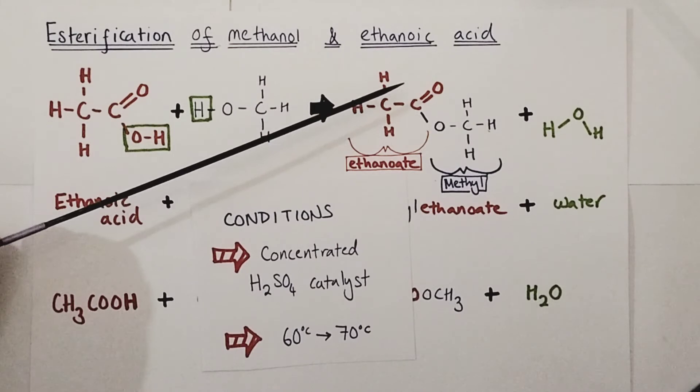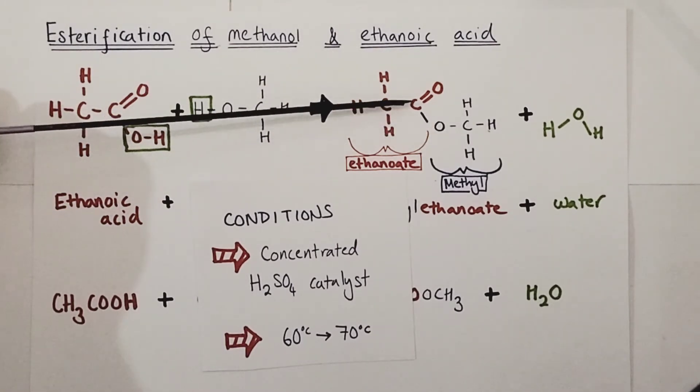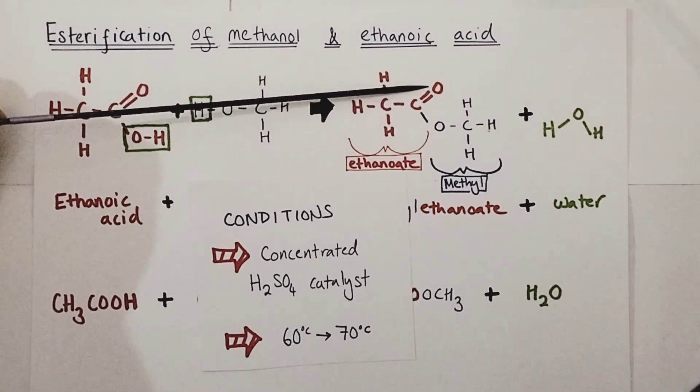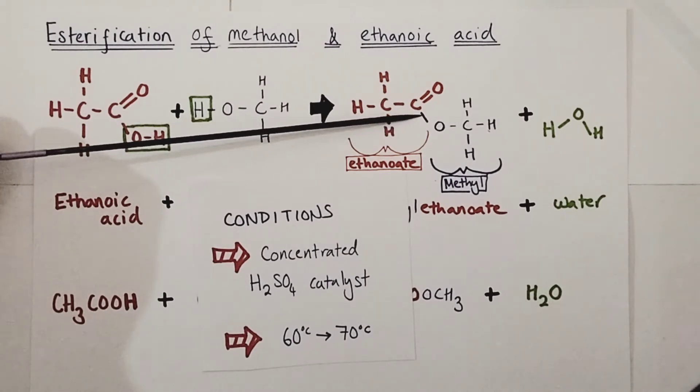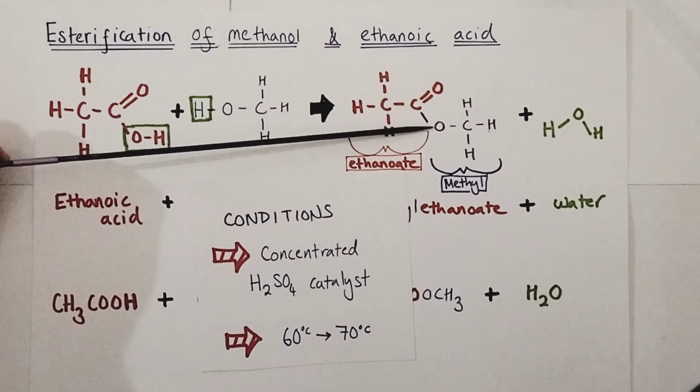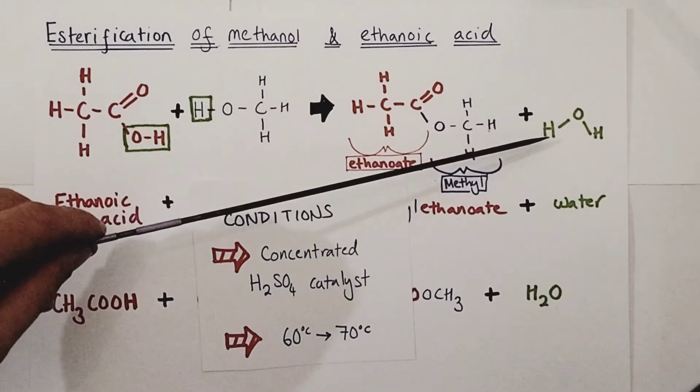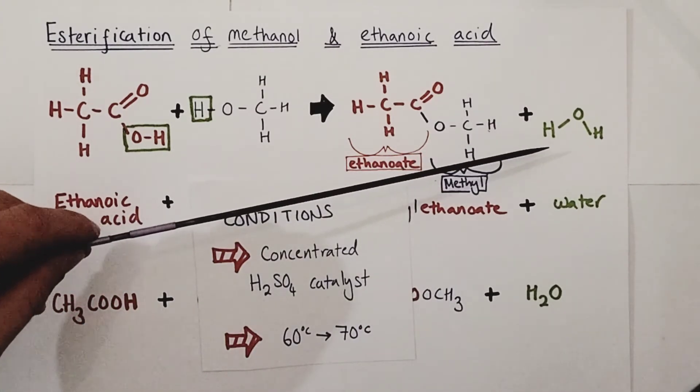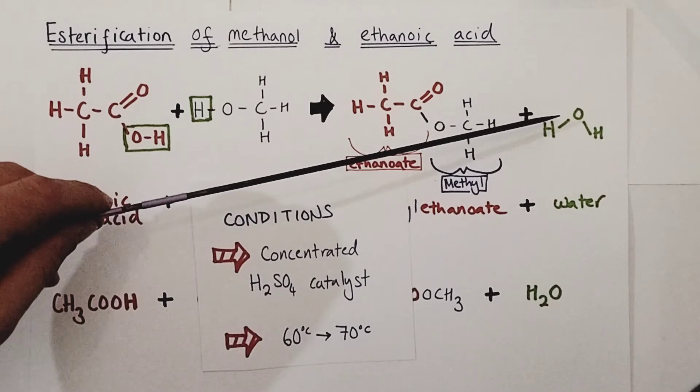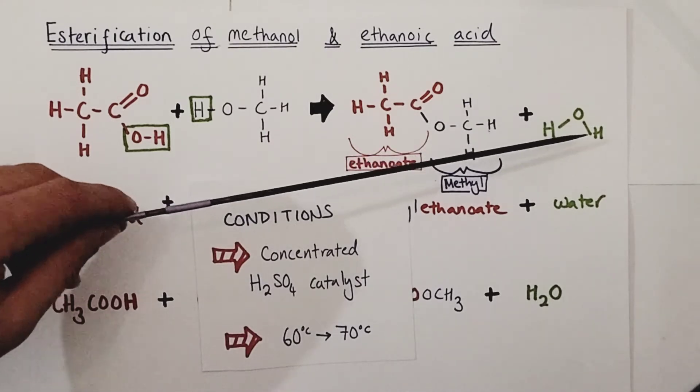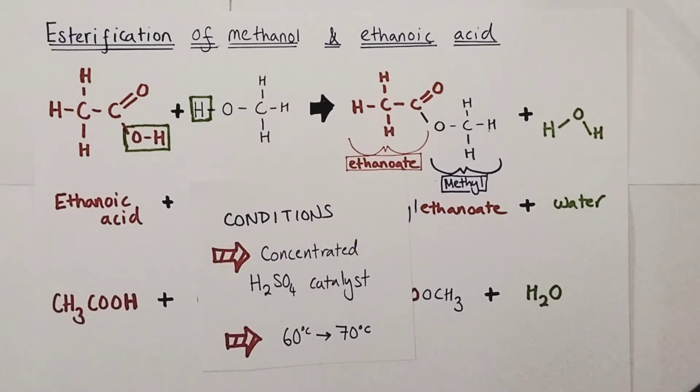You can see the ester linkage has formed here. There's the C=O of the carboxylic acid and then in blue that's my bond to the oxygen of what was originally the methanol. What is removed, what is lost, is water, and that's the OH from the carboxylic acid joined onto the hydrogen from the methanol to make that water.